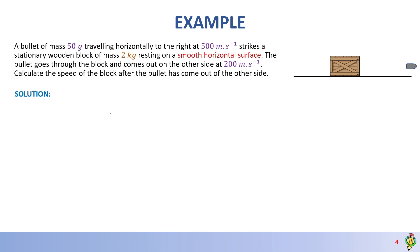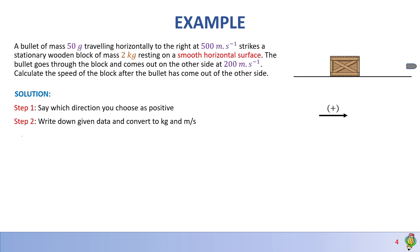Step 1: Always indicate the direction you choose as positive. Because we have velocities going to the right and some going to the left, in this case I'll choose to the right as positive. Step 2: Write down the given data and convert mass to kg and velocity to meters per second.